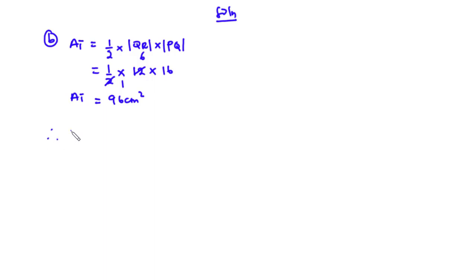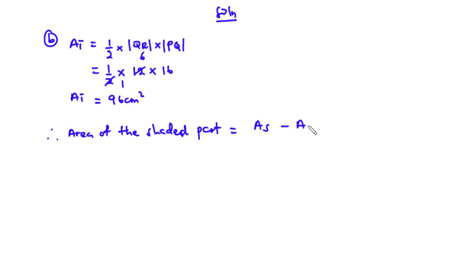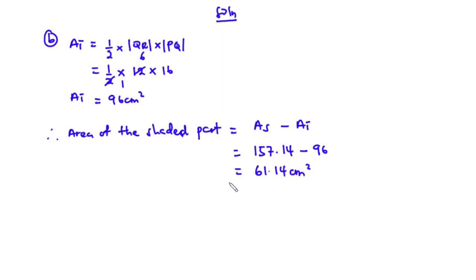Therefore the area of the shaded part equals the area of the semicircle minus the area of the triangle: 157.14 minus 96 = 61.14 centimeters squared. We are asked to leave our answer to three significant figures, so that is 61.1 centimeters squared. This is the area of the shaded part. Now let's solve our second question.